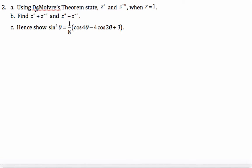Okay, so using DeMoivre's theorem, we're going to state z^n and z^(-n). We're going to let z equal cosine theta plus i sine theta. And so z^n is simply going to be cosine theta plus i sine theta to the power of n.